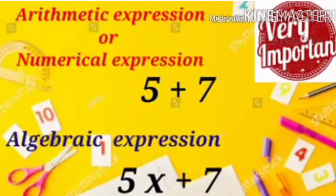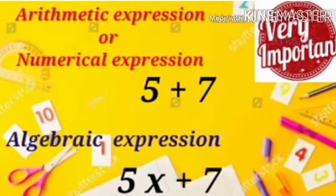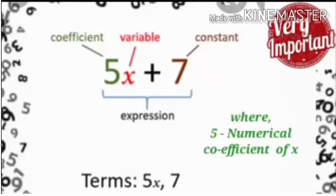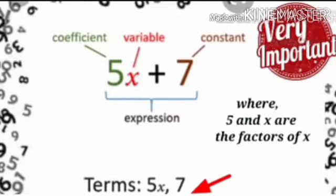Before going to do the problems, let's recall once again a few terminologies which we will encounter frequently. For example, 5 plus 7 can be called a numerical expression or an arithmetical expression. In this numerical expression, if an alphabet x is present — for example, 5x plus 7 — it becomes an algebraic expression, where the alphabet x is called the variable, while the numerical value in front of x is called the coefficient. The numerical value 7 is called a constant, which is a fixed value. Here, 5x and 7 are said to be the terms of an expression, and also the factors of the term.